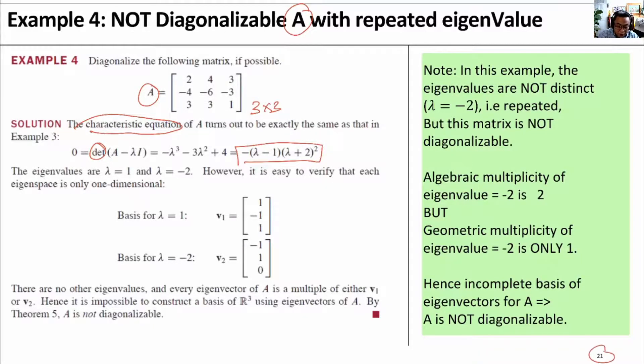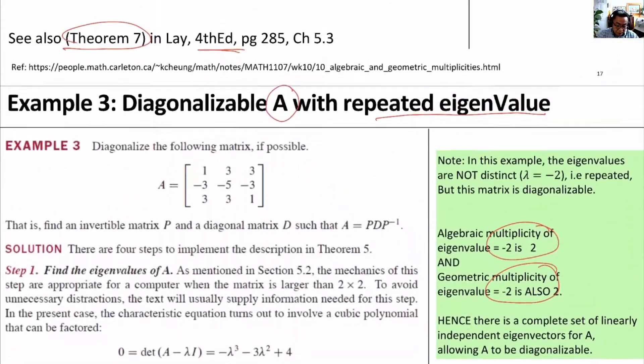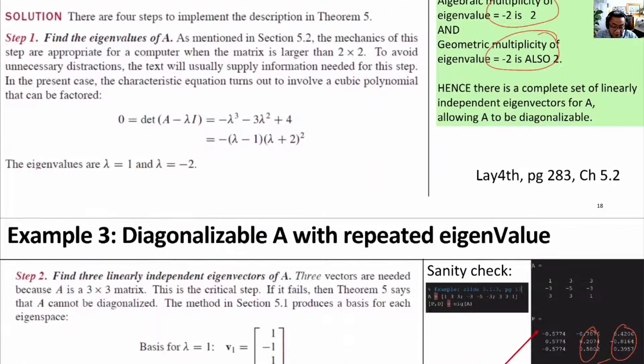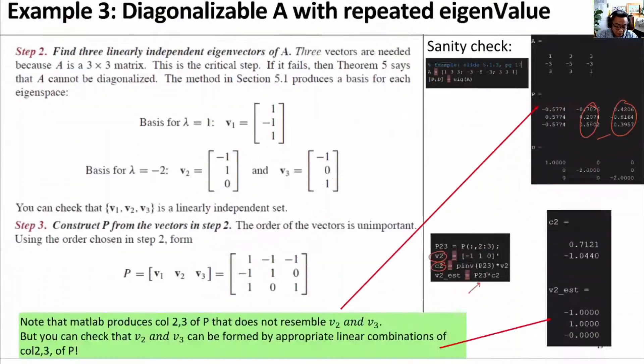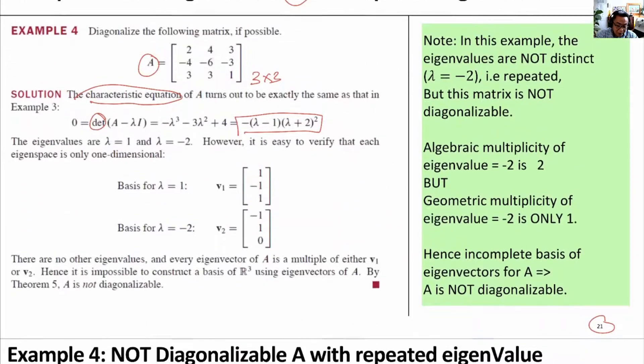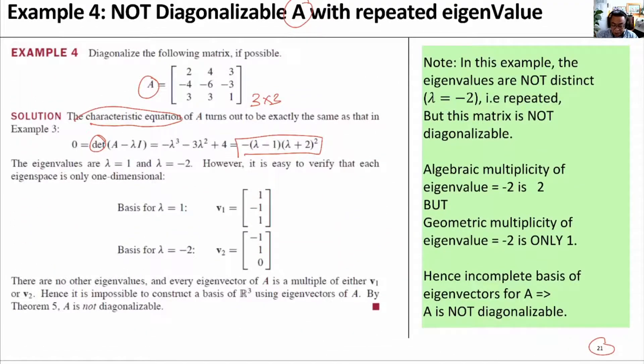page 21, compare to page 18. The characteristic equation is identical, showing us that lambda equals 1 and lambda equals minus 2 are also the eigenvalues of this matrix on page 21.